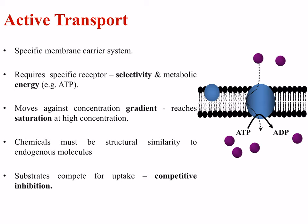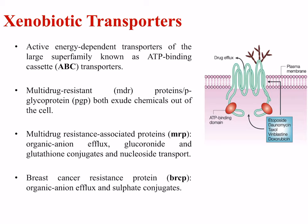In some cases, active transport is needed to move chemicals across a membrane. This involves specific membrane carrier systems, requires specific receptors providing selectivity, and uses metabolic energy in the form of ATP. Active transport generally moves substances against a concentration gradient and eventually reaches saturation at high concentrations. For potential toxicants, chemicals must be structurally similar to endogenous molecules, and such substrates compete with each other for uptake, leading to competitive inhibition in some cases.